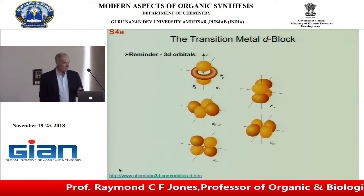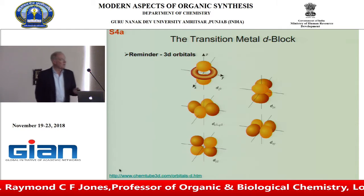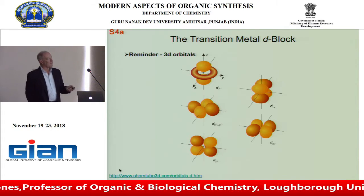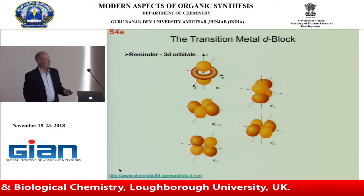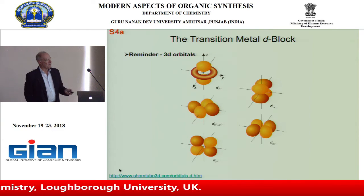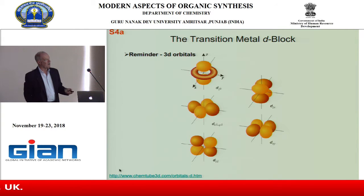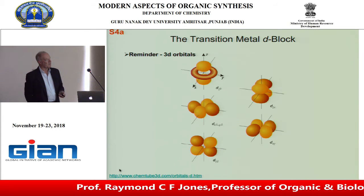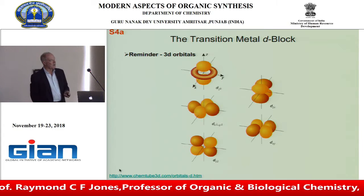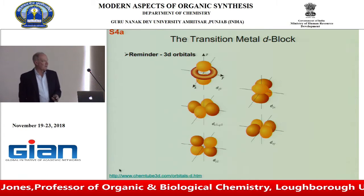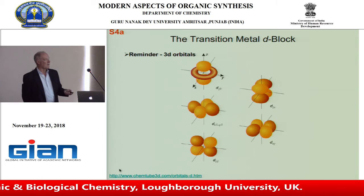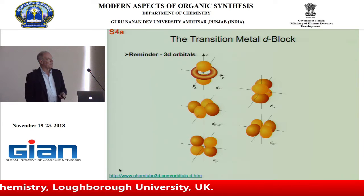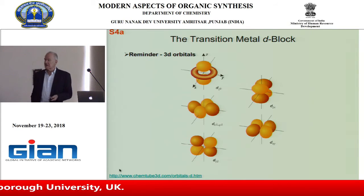To remind you what the d orbitals look like: there's the dz² orbital, the dx²−y² orbital where the lobes are along the axes, and three combinations where the lobes are between pairs of axes — dyz, dxy, and dzx. That's the set of five d orbitals we're dealing with.